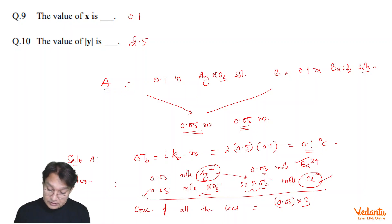So, that is the concentration of ions in the mixture. So, what is the delta TB now? Now, delta TB will be, effective concentration, 0.15 M into KB is equals to 0.5.